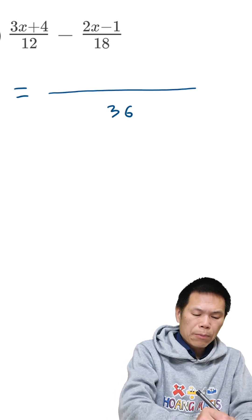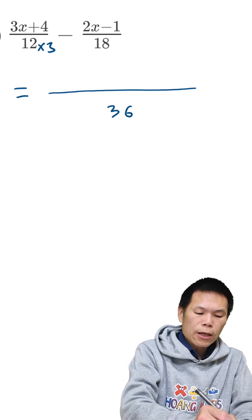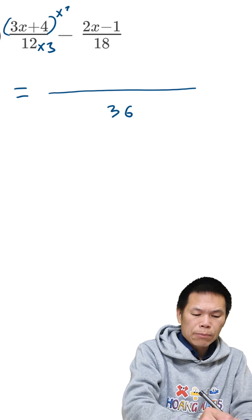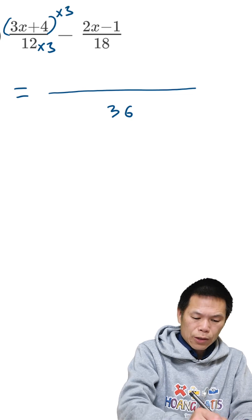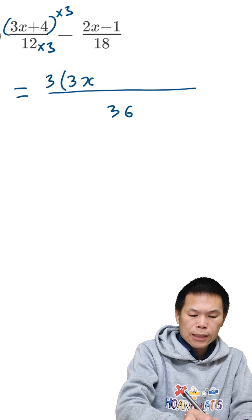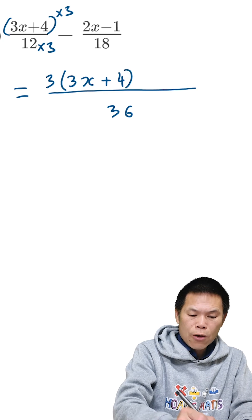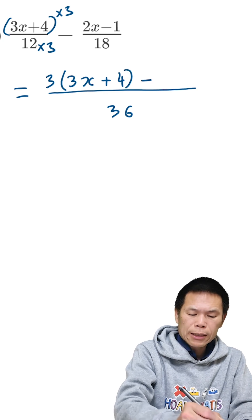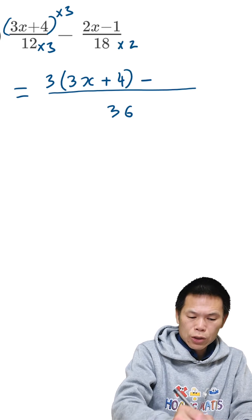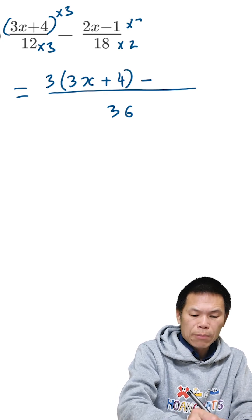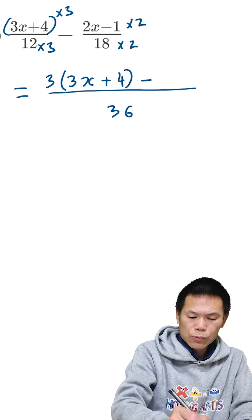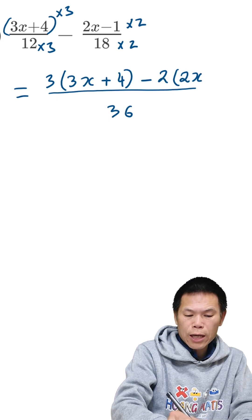So I times this by 3, so this whole lot times 3. So 3 bracket 3x plus 4, we minus, we times this by 2. So the top times 2. So that means 2 bracket 2x minus 1.